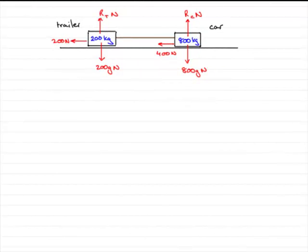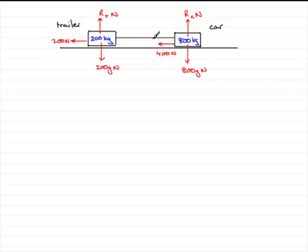In this part of the question, the driving force has been removed because the brakes are applied. We've got a braking force which is going to be F. We need to put F on the diagram — it's going to be acting to the left, slowing the vehicle down. So we put that up here as F newtons, and this is the value we need to find.